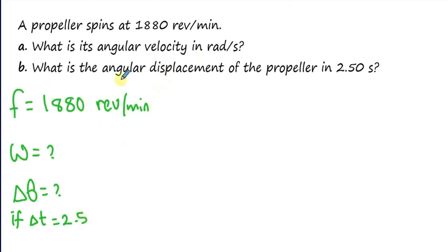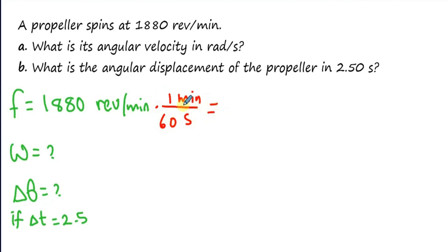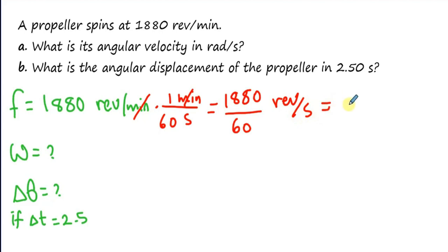To convert frequency to revolutions per second, I get rid of minutes in the denominator by multiplying by minutes in the numerator and putting seconds in the denominator. One minute equals 60 seconds, so 1880 divided by 60 — cancelling minutes — equals 31.3 revolutions per second. This is the frequency in revolutions per second.